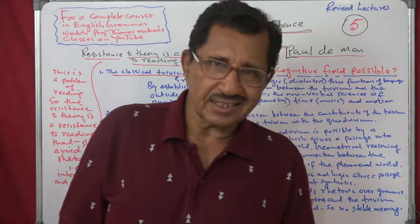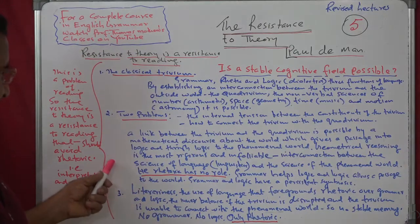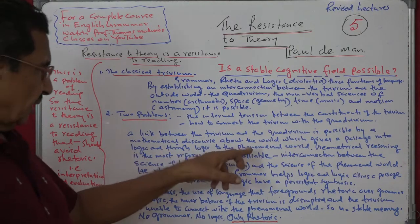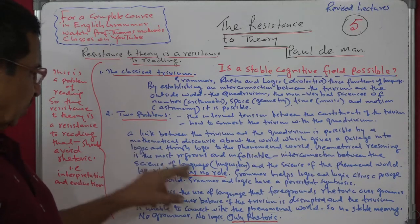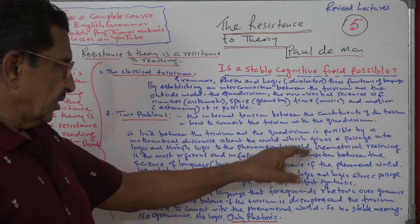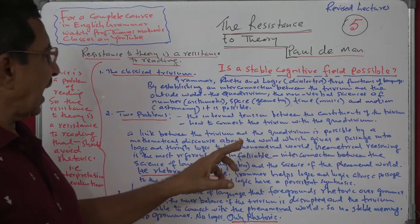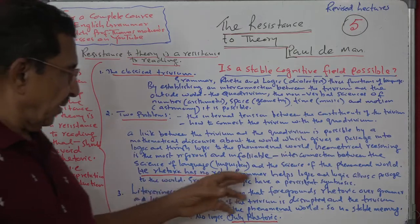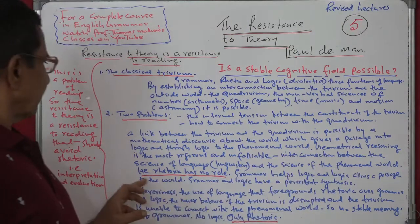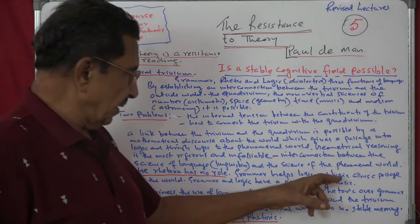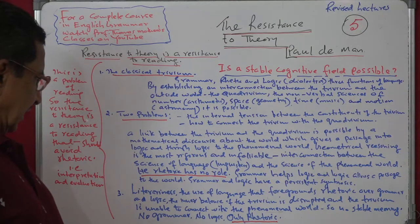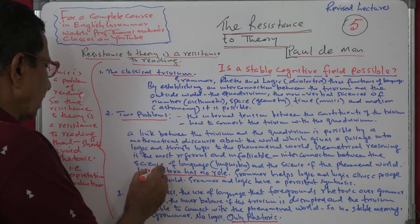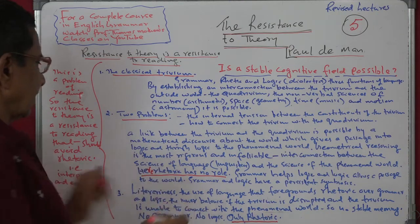Mathematical discourse takes you to logical discourse, and logical discourse takes you to the outside world. This is what De Man says in this essay: a link between the Trivium and the Quadrivium is possible by a mathematical discourse about the world, which gives a passage into logic and through logic to the phenomenal world. Geometrical reasoning is the most rigorous and infallible — meaning it cannot make mistakes. Here, rhetoric has no role.